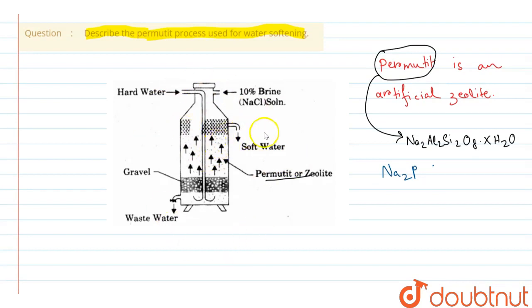In this diagram we can see a tall cylinder is loosely filled with lumps of permutate. When hard water containing calcium and magnesium ions percolates through these lumps,